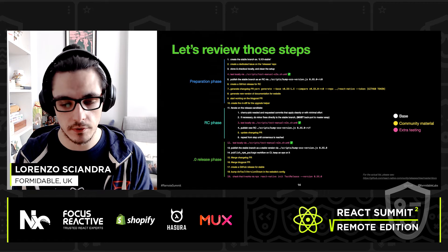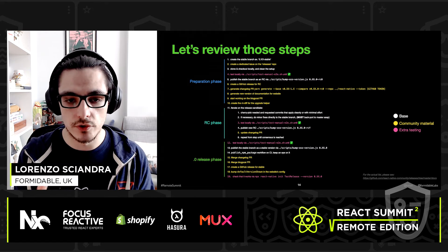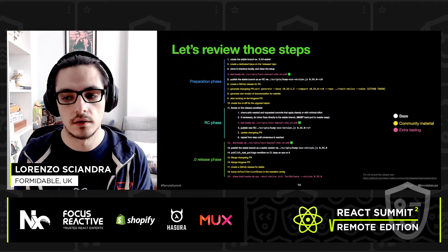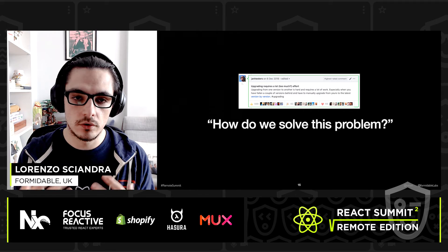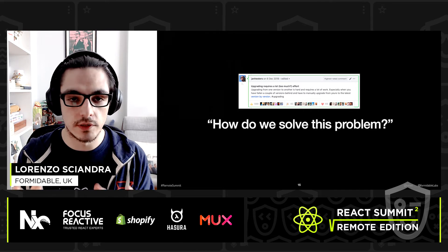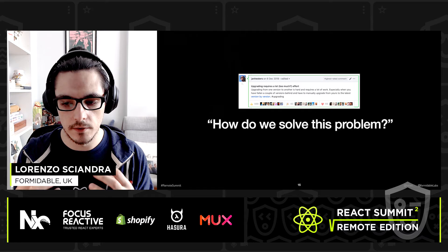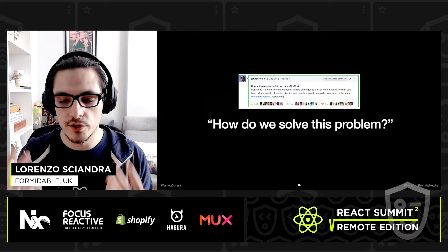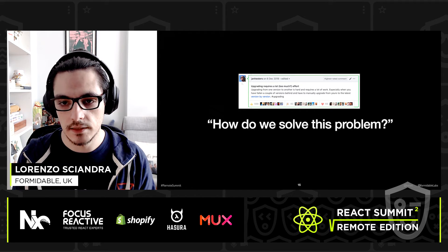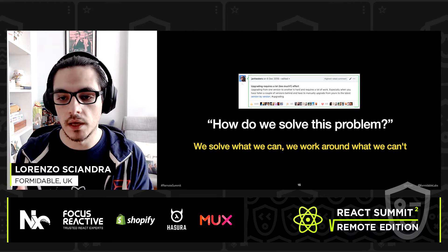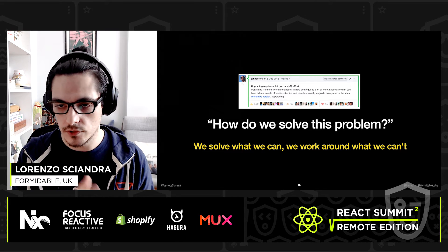That includes documentation, the blog post, the diffs for the Upgrade Helper, and a lot of manual testing to ensure the code behaves reliably. All of this is because of a comment that really highlighted the problem around React Native releases, which left the whole team with a constant question in the back of our minds: how do we solve this problem?